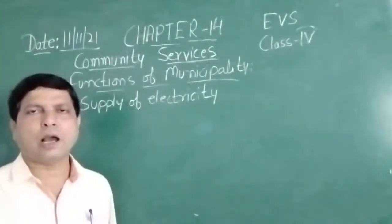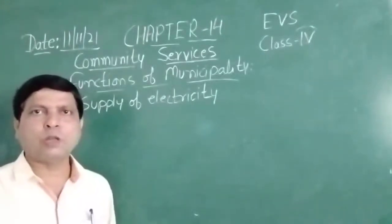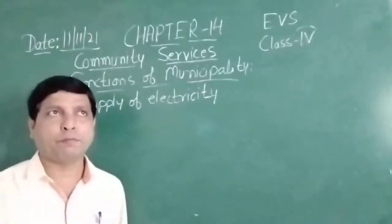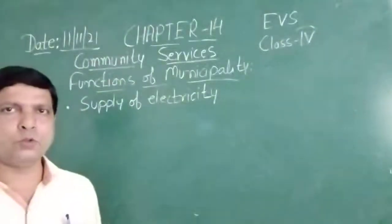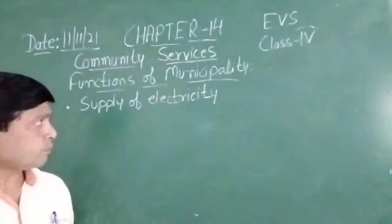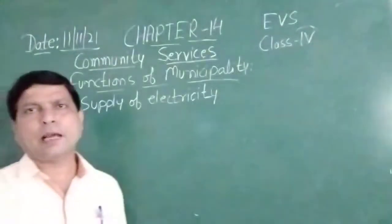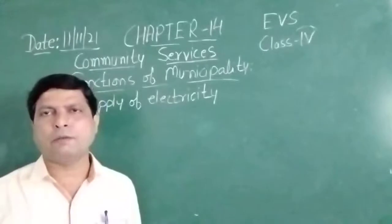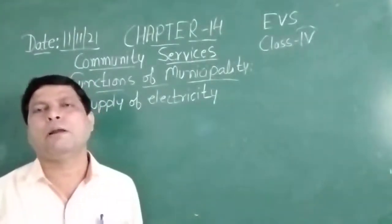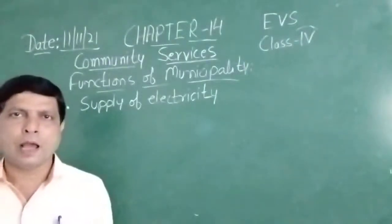Most things running in our houses work due to electricity. For example, your fan, your fridge, your radio, television, and mobile — you charge your mobile. So in present time, we can say that electricity has become a basic need because the maximum number of things in our house work with the help of electricity.